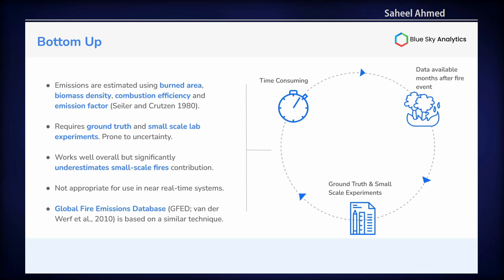Bottom-up, as the name suggests, gives importance to ground observation. It requires researchers to go to field studies, take observations, perform small-scale experiments, and then combine the results either with satellite data or more ground truth. The importance of ground truth is really helpful since it calibrates your model estimates. However, this very strength limits the scope of this approach. For example, performing small-scale experiments everywhere is logistically impossible, especially when going for global emission estimates — you won't be able to perform such experiments at every region and every different vegetation type.